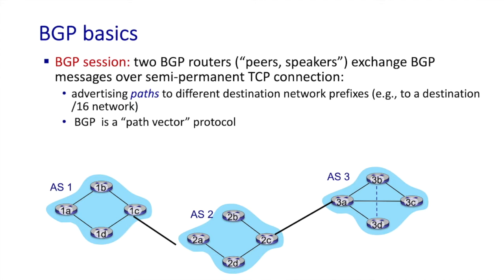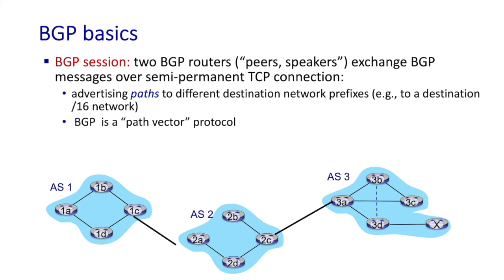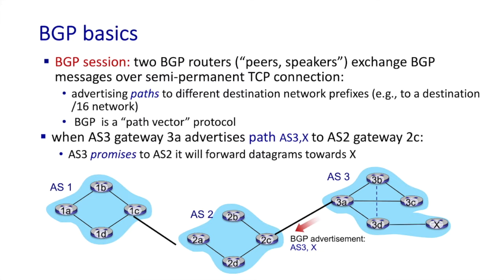BGP peers advertise paths to different destination network prefixes — for example, /24 or /16 networks. For this reason, because BGP advertises paths, BGP is sometimes known as a path vector protocol. When network X attaches to AS3, AS3 now knows it can reach X. So AS3 gateway 3A advertises the path AS3,X to AS2 gateway 2C. In this way, AS2 learns about the reachability of X through AS3. When AS3 advertises a path to X, AS3 is essentially promising to AS2 that it is both able and willing to forward datagrams towards X.